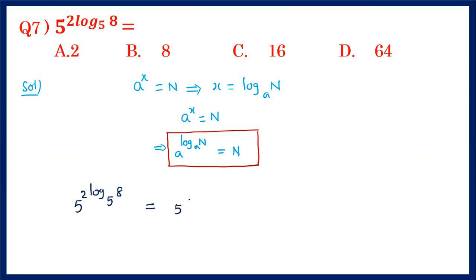Since 8² = 64, this becomes 5^(log₅64). Now, a^(log_a n) is always equal to n.